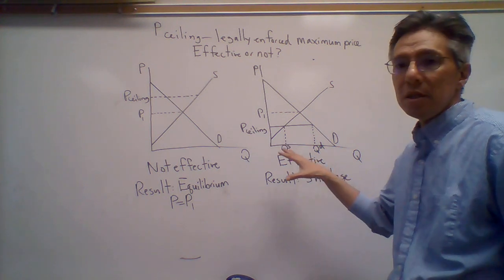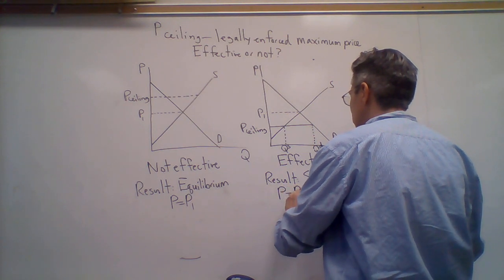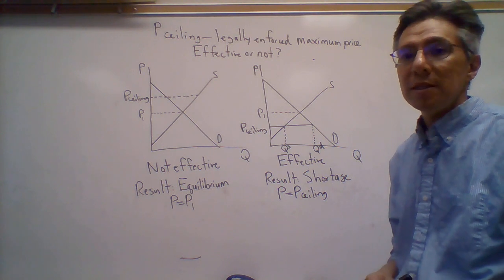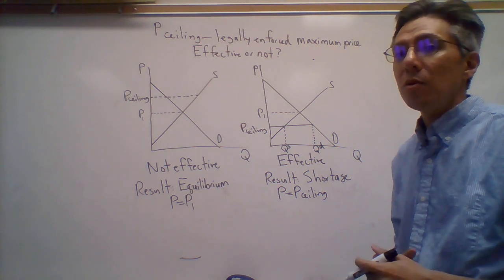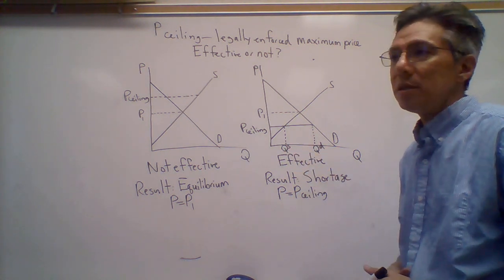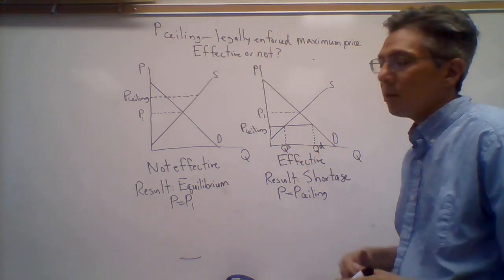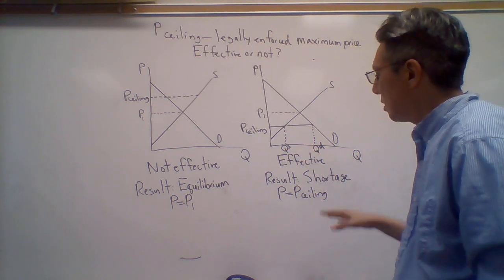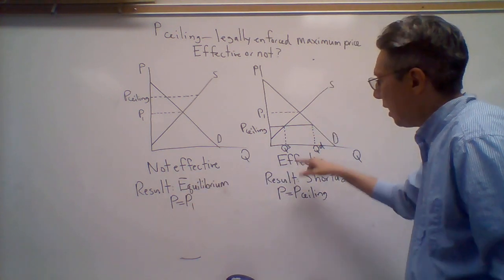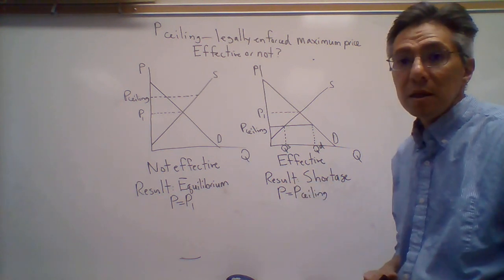So where is the price? Price is going to be equal to the price ceiling. And in terms of the quantity, what's going to be interesting is the quantity here in terms of the amount of trades is going to actually be the lower of the two. It's actually going to be the quantity supplied in this case. But for now, just note that the result here when it's not effective is the equilibrium, and when we have this case where it's effective, the price is going to be this price ceiling.